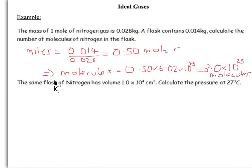The first stage is we need to convert our volume into the SI unit of metres cubed. So, 1.0 times 10 to the 4 centimetres cubed. There are 1 million centimetres cubed in a metre cubed. So, that must mean there are 1.0 times 10 to the minus 2 metres cubed here. We've got our volume.